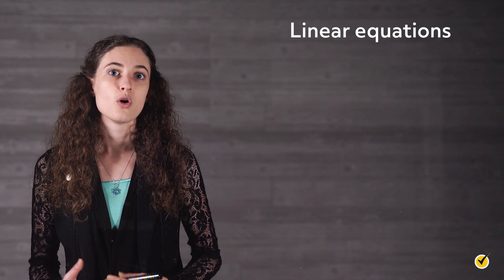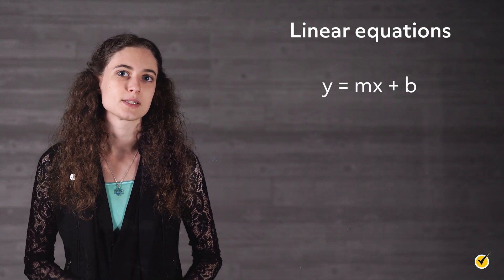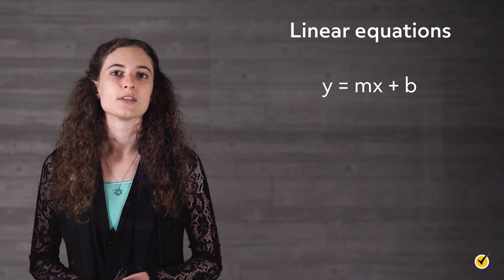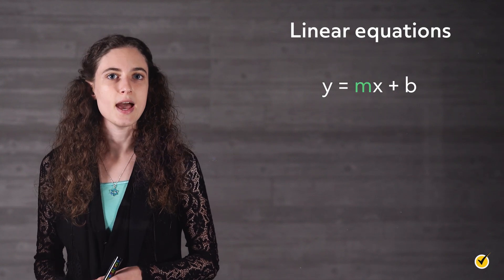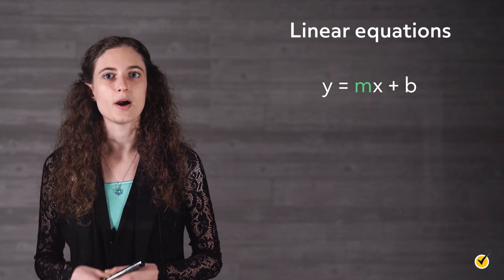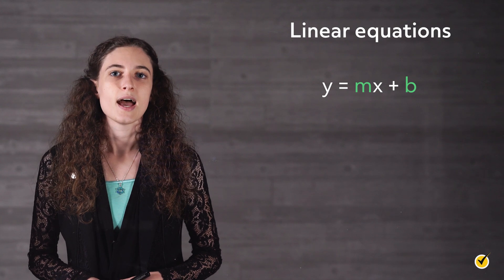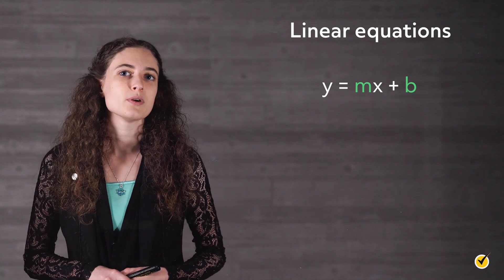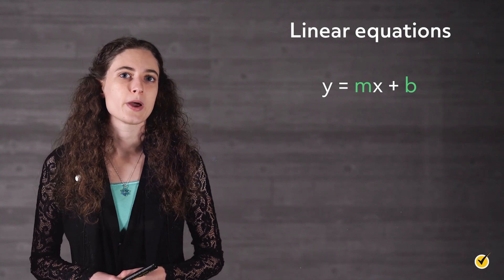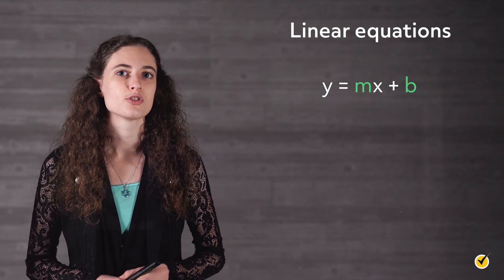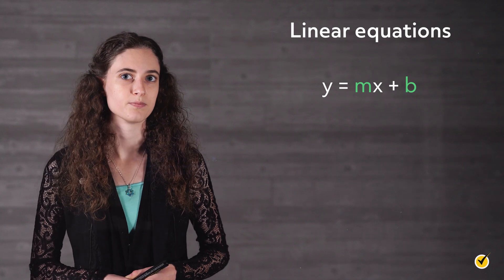Remember that a linear equation describes a straight line on a graph. They generally look something like this: y equals mx plus b. The slope of the line is represented by m, and the y-intercept is represented by b. x and y simply represent an ordered pair that would fall on the graphed line for that equation.